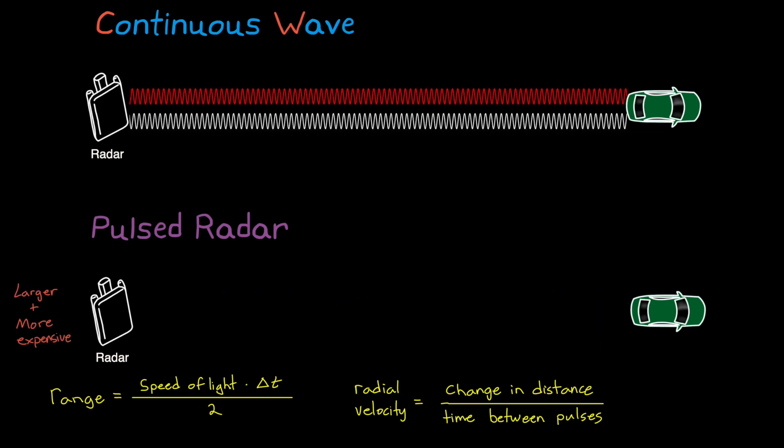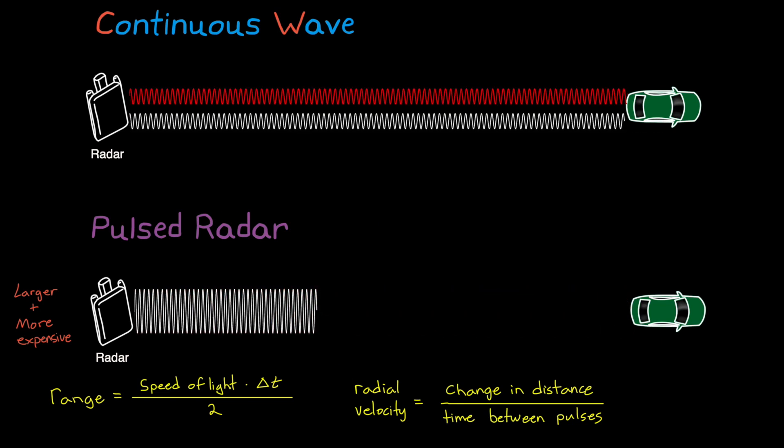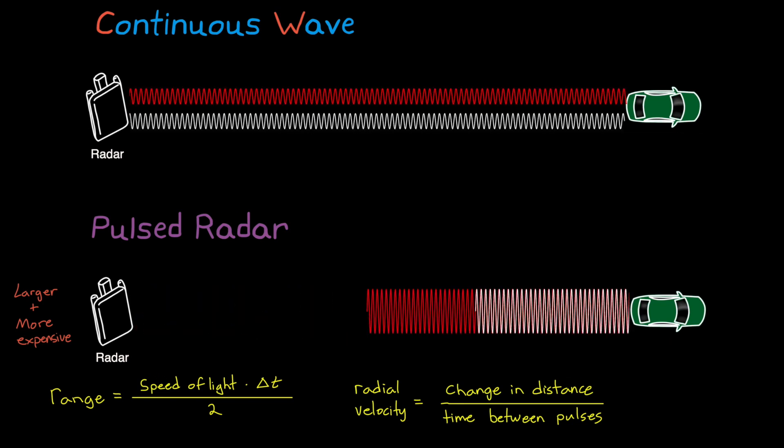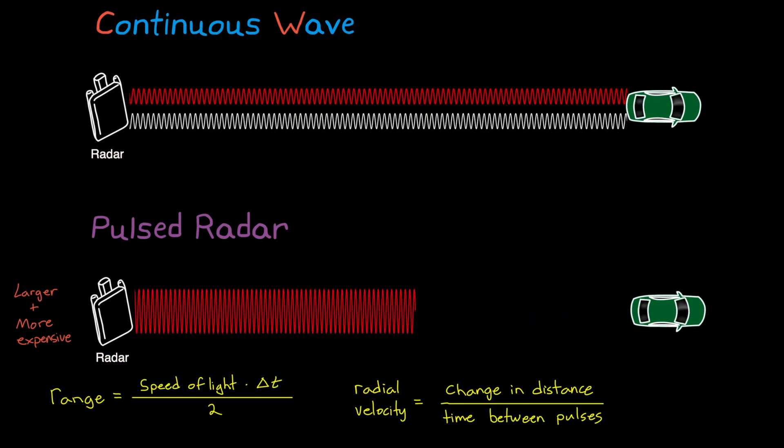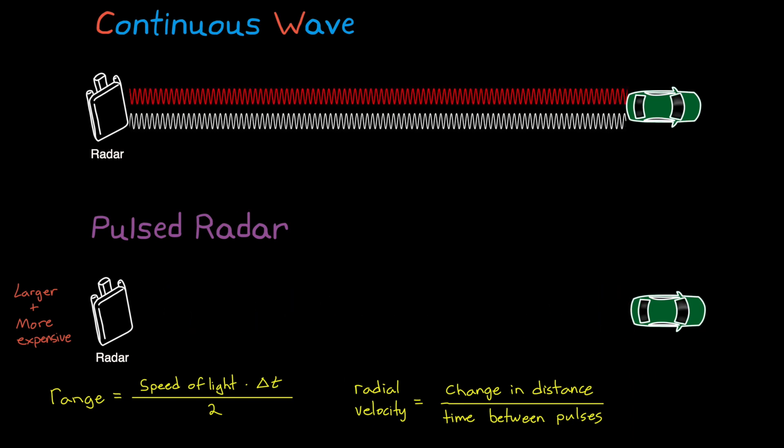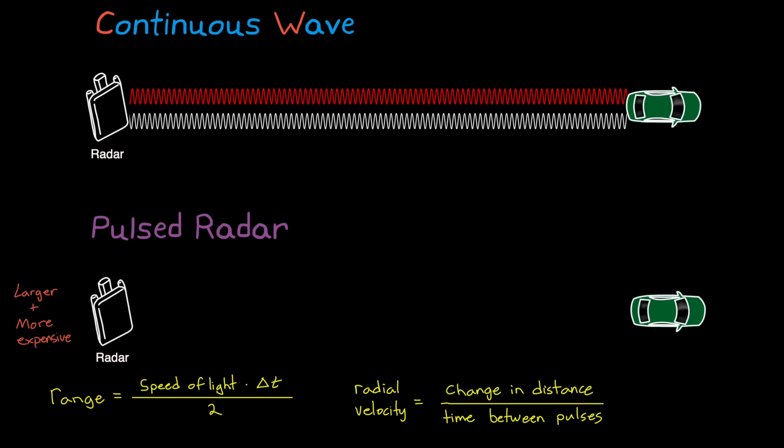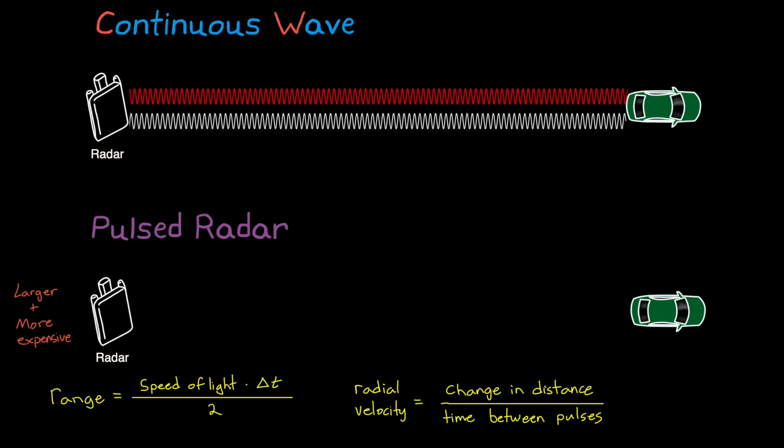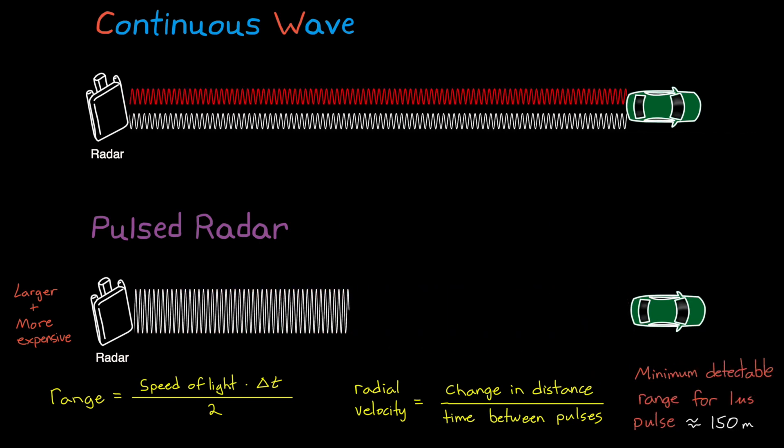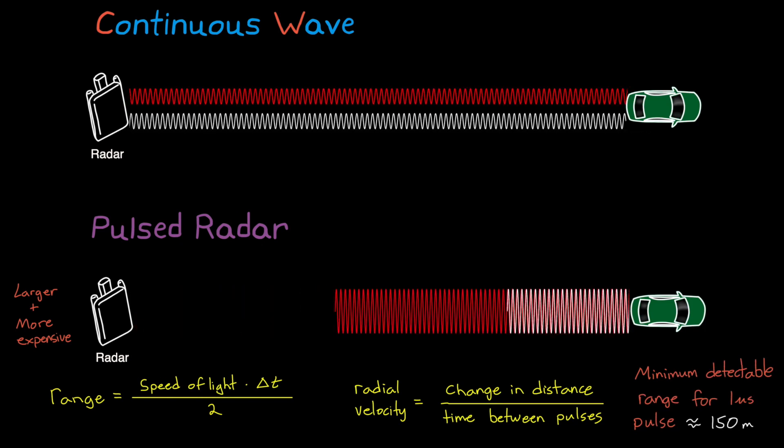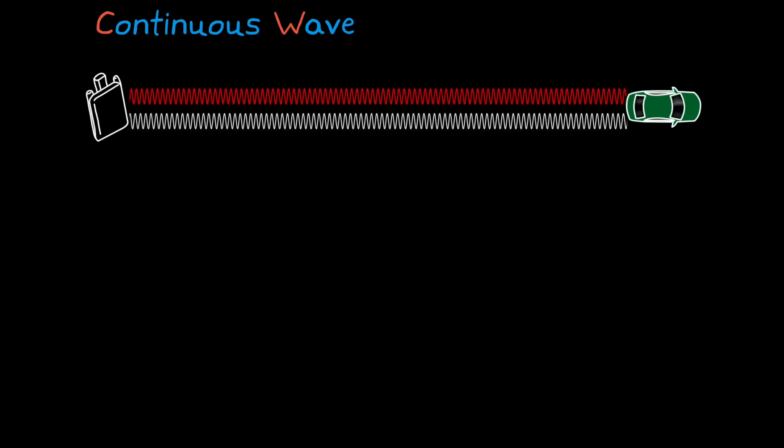For example, in pulsed radar, the pulses need to be relatively powerful so that the return signal has enough energy to be detected over the short duration, often just a microsecond or so. Handling these large peak power loads can make the electronics larger and more expensive than continuous lower power loads. Another reason is that pulsed radars have a minimum range that can be detected of about half the length of the pulse.